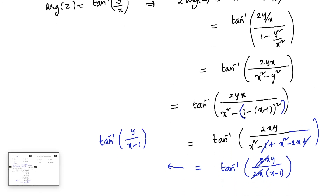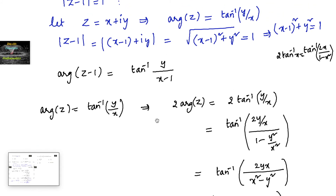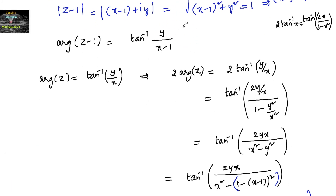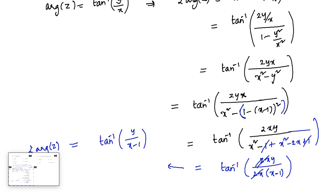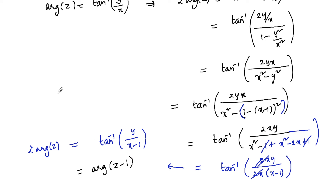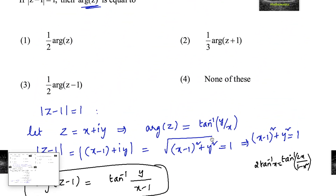So tan inverse of this expression is 2 times argument of z, which equals tan inverse of y upon x minus 1. We can write this is argument of z minus 1. So 2 times argument of z is equal to argument of z minus 1, or equivalently, argument of z is equal to half of argument of z minus 1.